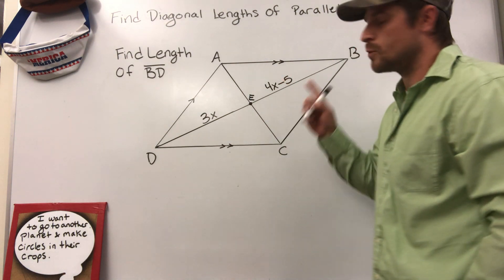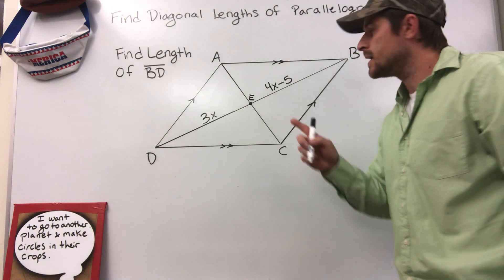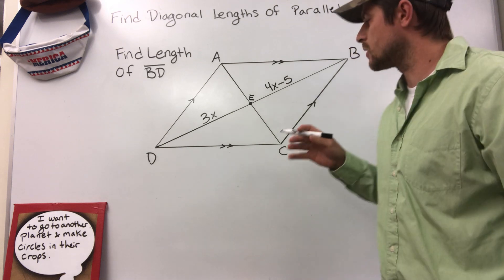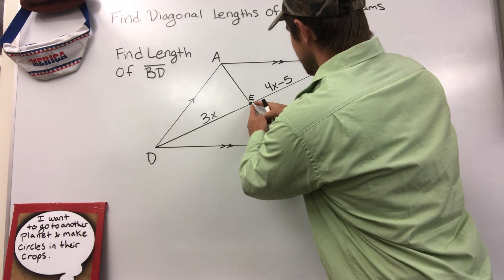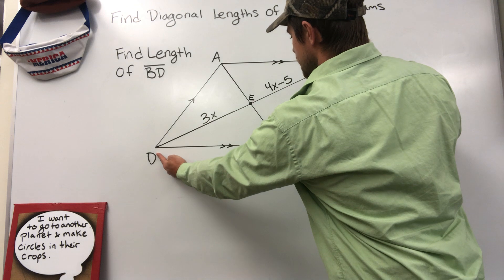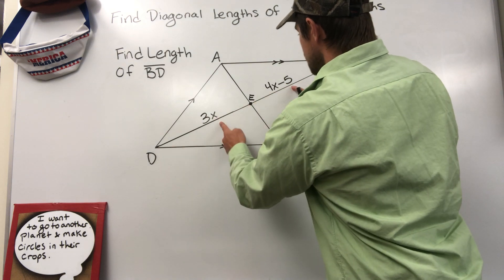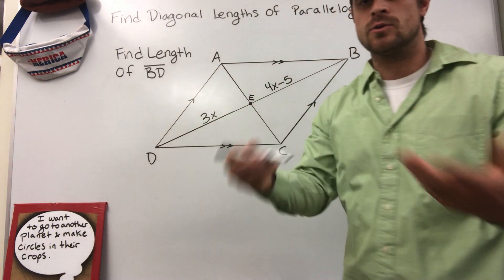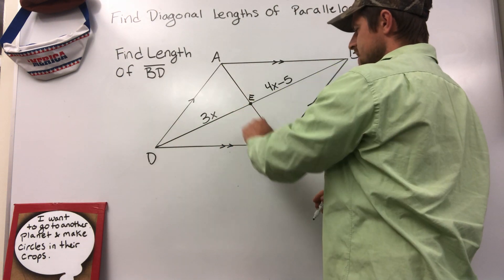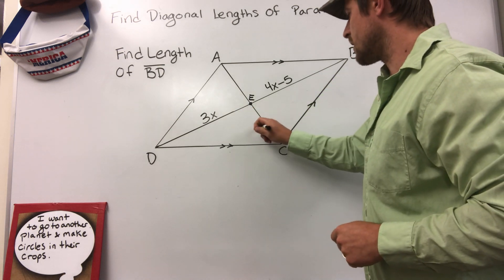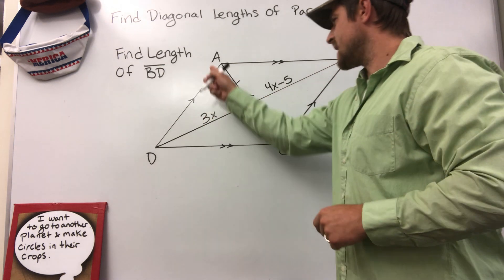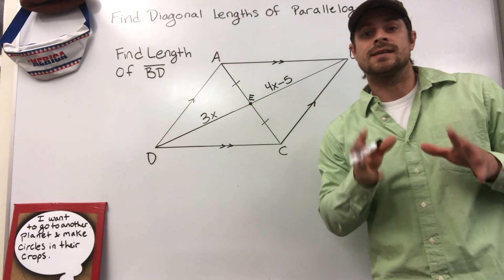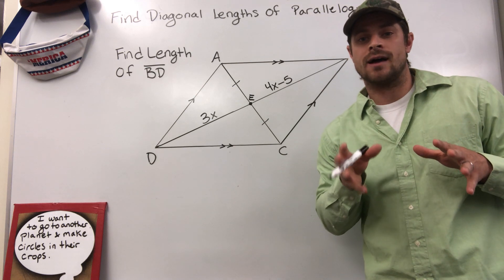One of the properties that we know about a parallelogram is that the diagonals are bisectors of each other, meaning they're going to cut this line BD right down the middle. These two are equal - BE and DE are equal, same with AE and CE. These are bisectors. This line bisects AC making these equal lengths. So since we know that, we can use a little bit of algebra and figure out exactly what the distance or length of this line is.